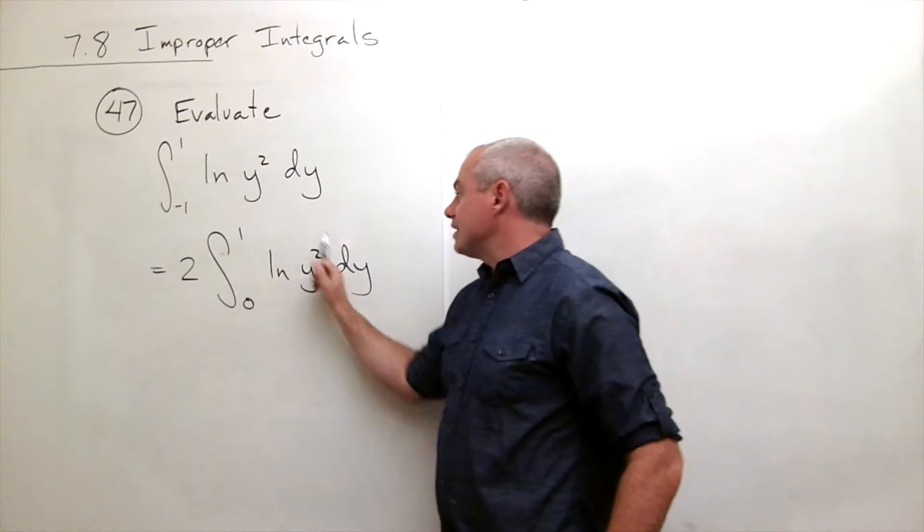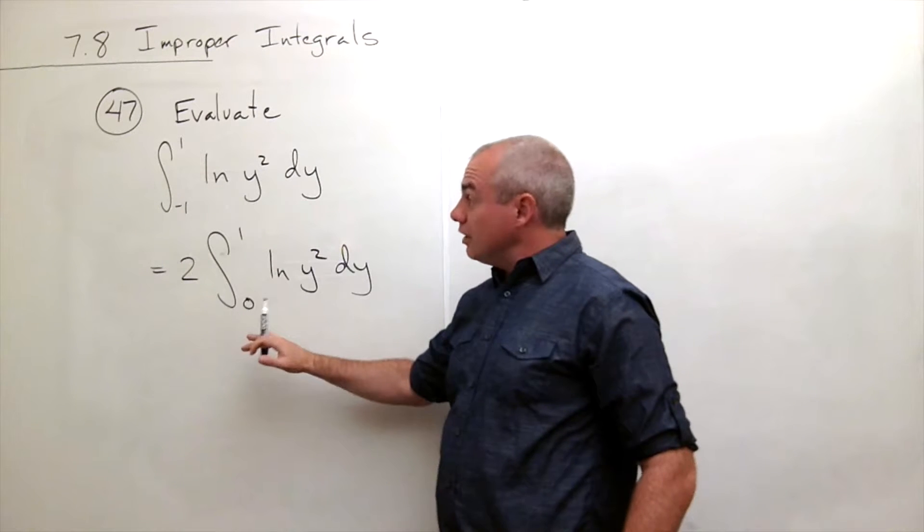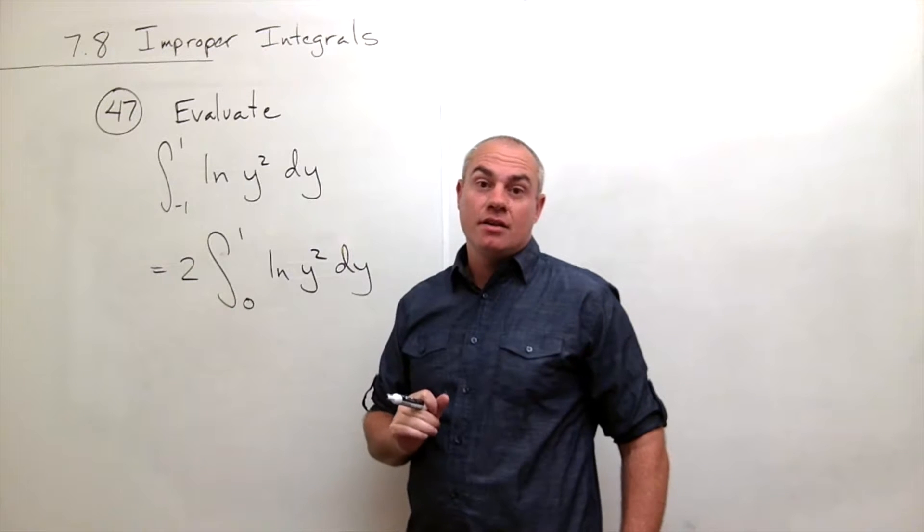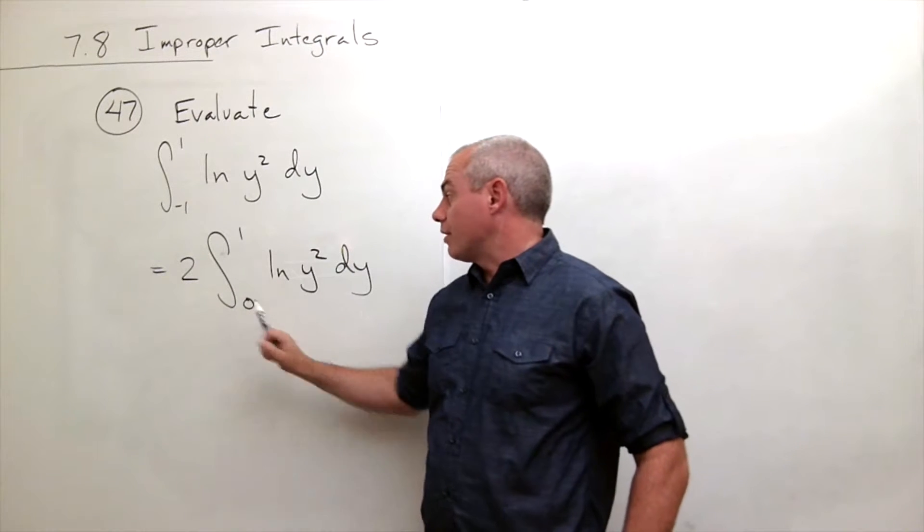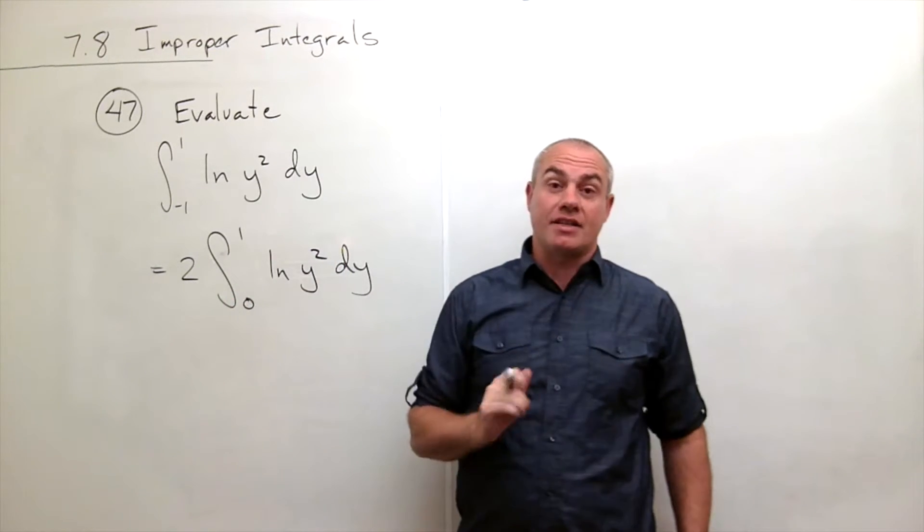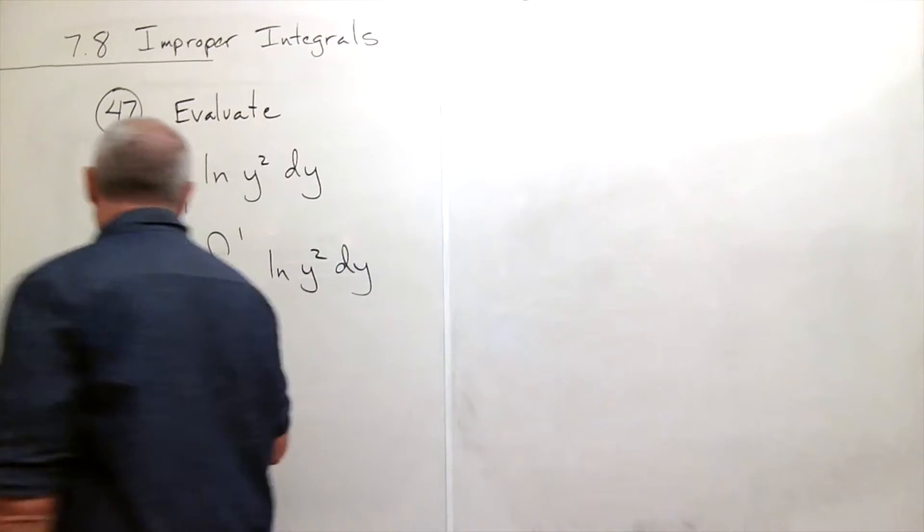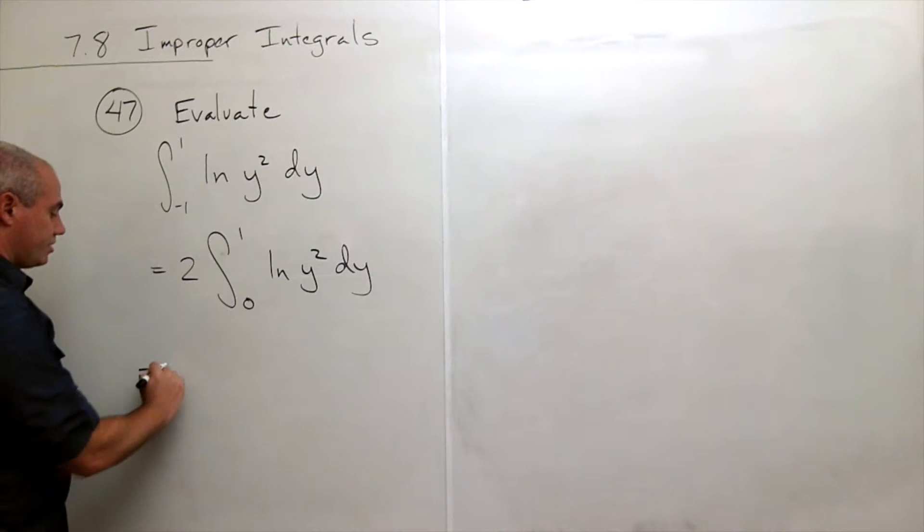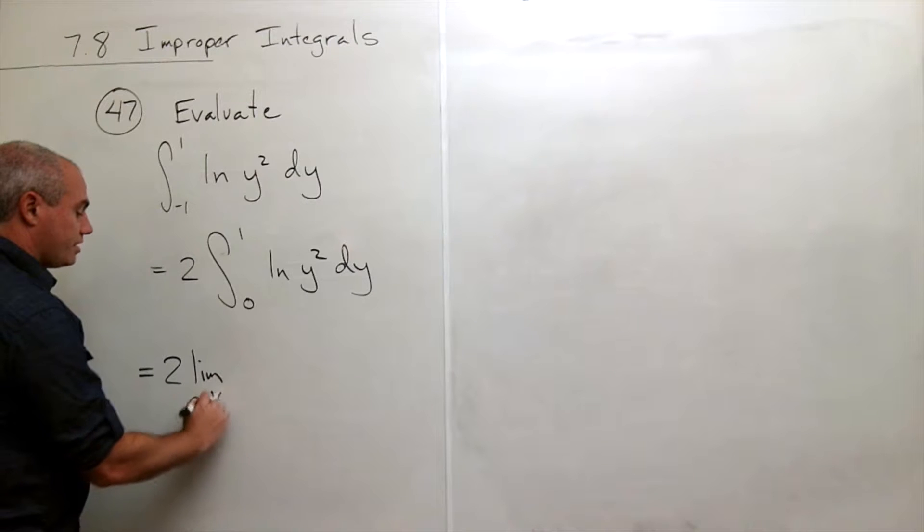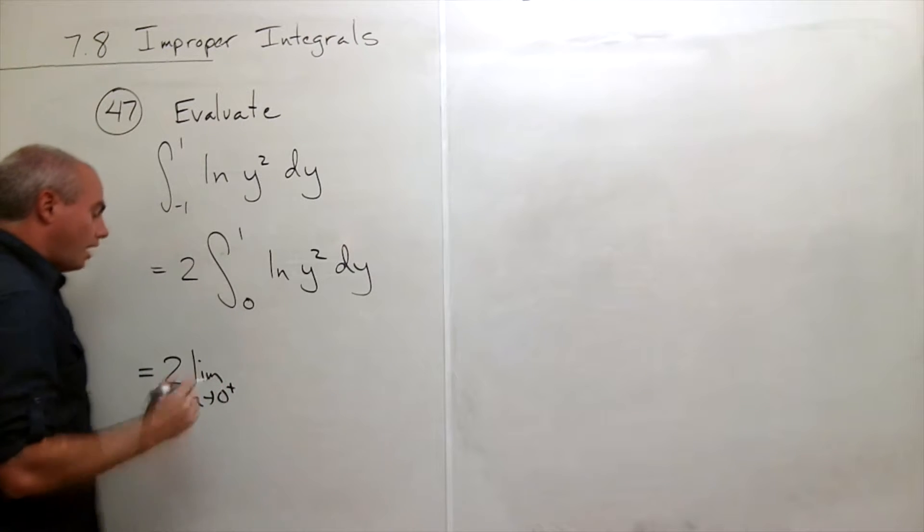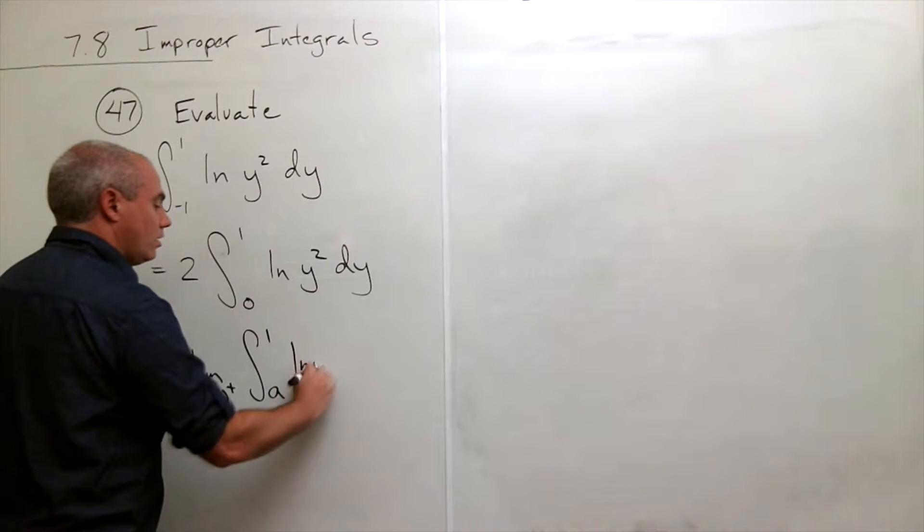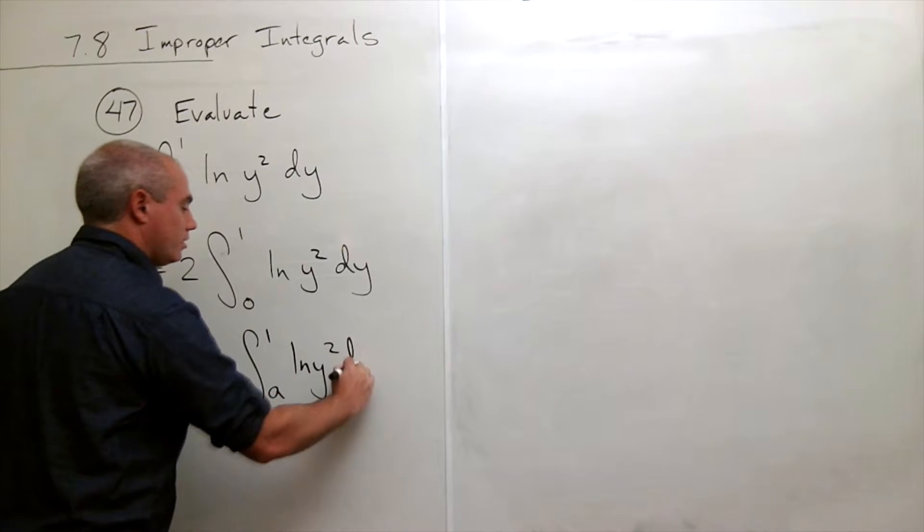So now that I see this, this makes it a little bit easier in that the improper piece is on the bottom and is one of my limits. Now I could write this improper integral as a limit. I could say this is 2 times the limit as a goes to 0 from the right of the integral from a to 1 of ln y² dy.